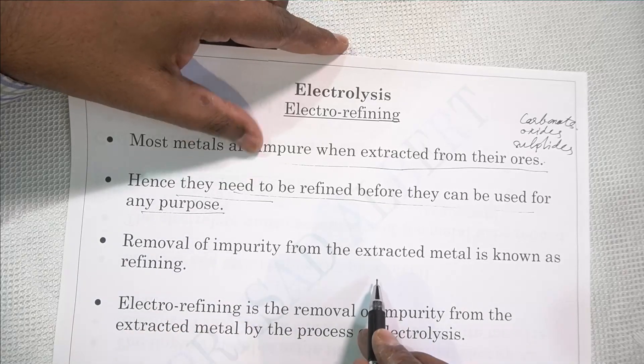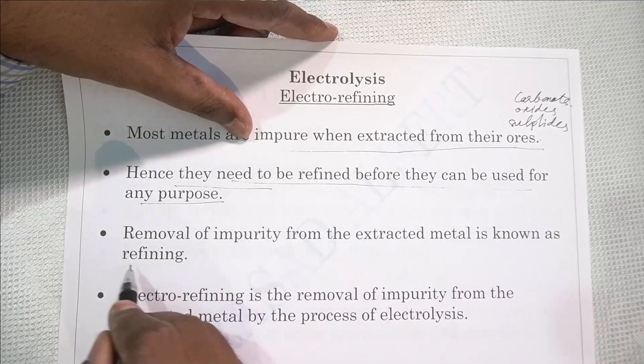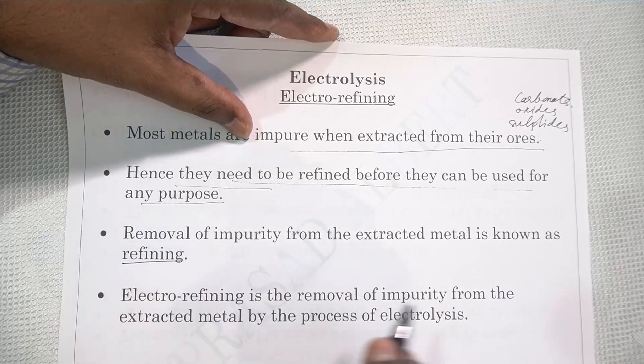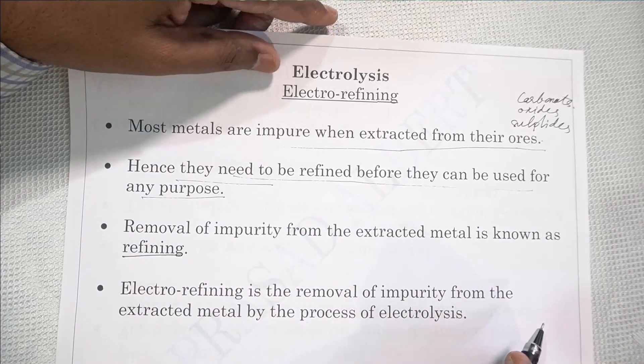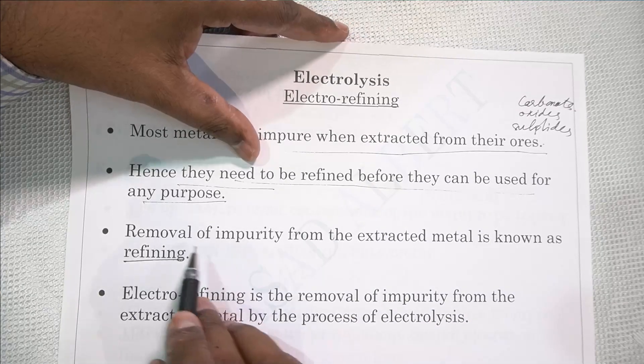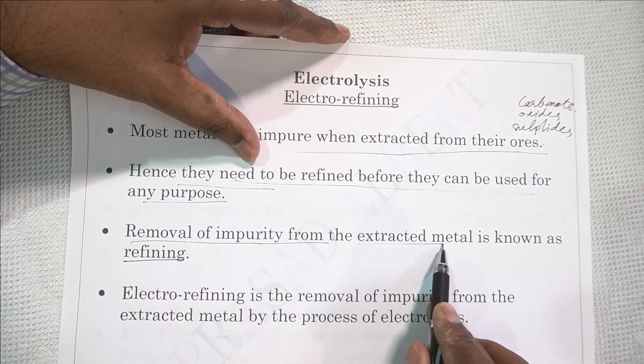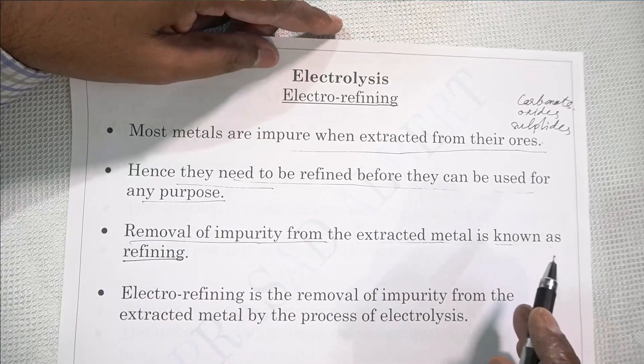Removal of impurities from the extracted metal is known as refining. So, refining is the removal of impurity from the extracted metal.